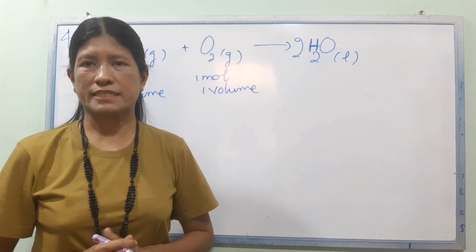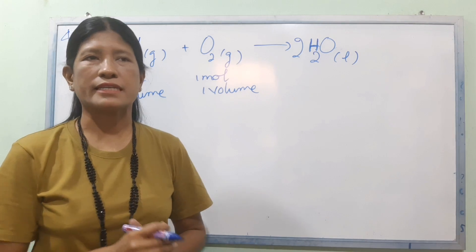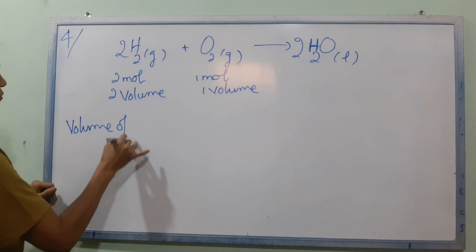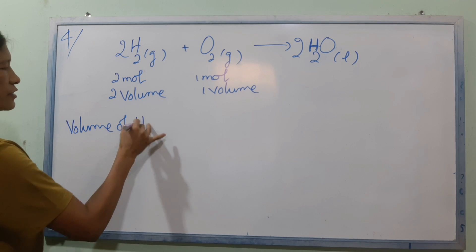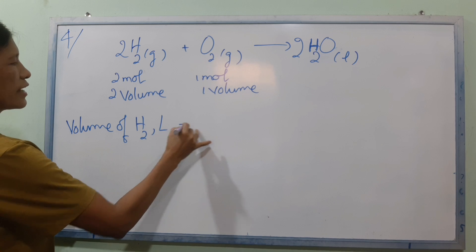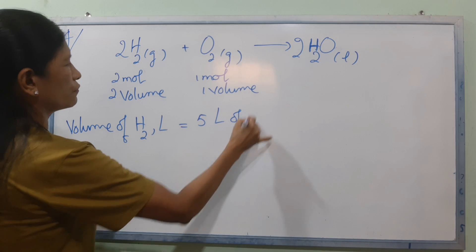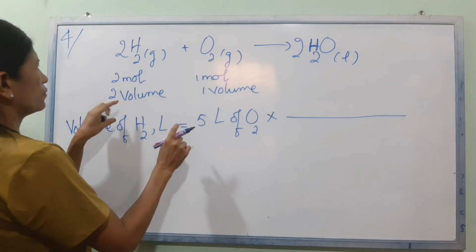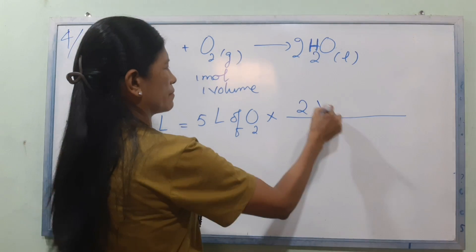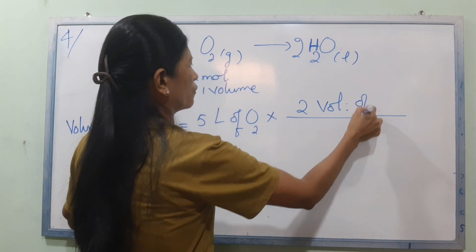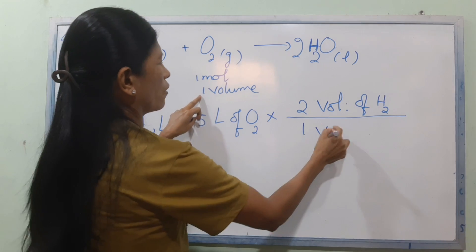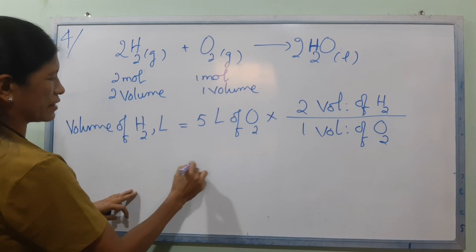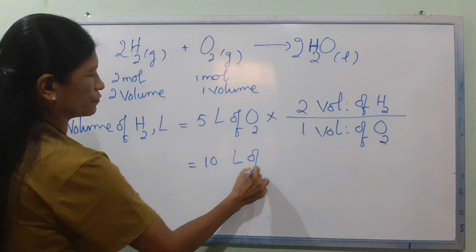We have oxygen 5 liters, so we need hydrogen. Volume of H2 divided by 2 equals volume of O2 divided by 1. Then we get 10 liters of H2.